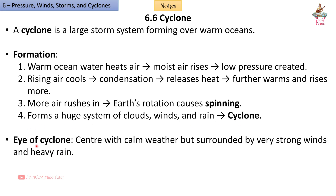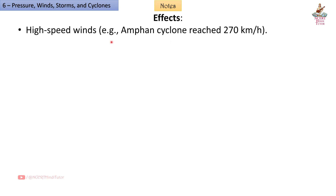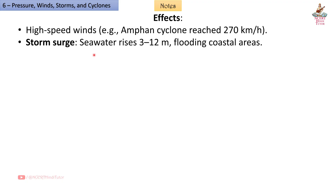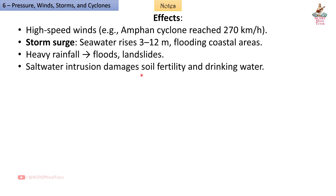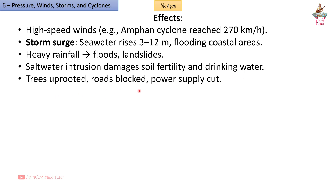The eye of the cyclone is the center with calm weather, but it is surrounded by very strong winds and heavy rain. Effects: High speed winds — the Amphan cyclone reached 270 km/h. Storm surge: sea water rises 3 to 12 meters, flooding coastal areas. Heavy rainfall causes floods and landslides. Salt water intrusion damages soil fertility and drinking water. Trees are uprooted, roads blocked, and power supply cut.